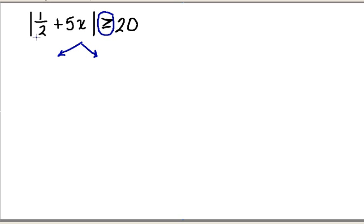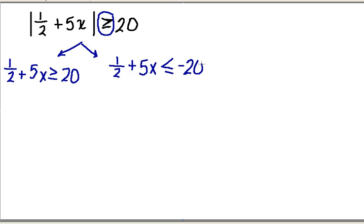The first problem we write by just dropping the absolute value sign, so this becomes 1/2 + 5x ≥ 20. I haven't changed anything, just dropped the absolute value. For the second inequality, we drop the absolute value, the left side stays the same (1/2 + 5x), then reverse the inequality to less than or equal to, and change the sign on the number to -20 instead of +20.